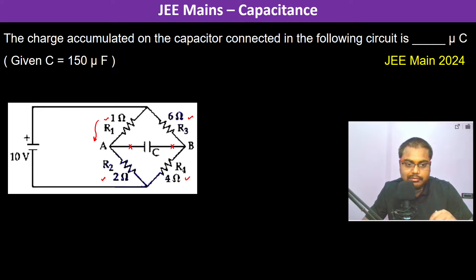The current flowing through R1 and R2 is 10 divided by 3 amperes, because 1Ω plus 2Ω equals 3Ω in series, so 10V divided by 3Ω. The current through R3 and R4 is 10 divided by 10, because 6Ω plus 4Ω equals 10Ω, therefore it's 1 ampere.